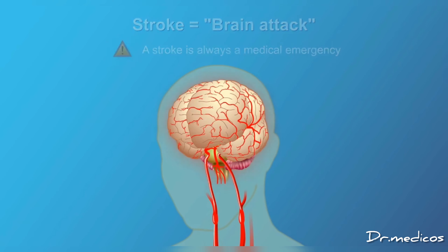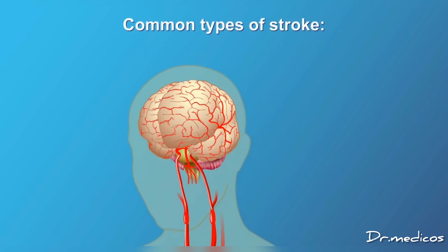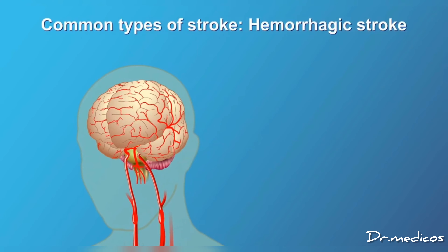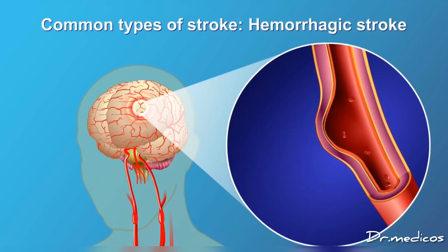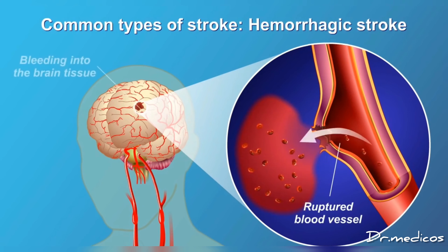There are two common types of stroke. The first is called hemorrhagic stroke, and occurs when a weakened blood vessel ruptures in or near the brain, leaking blood into the brain and causing brain cells to die.